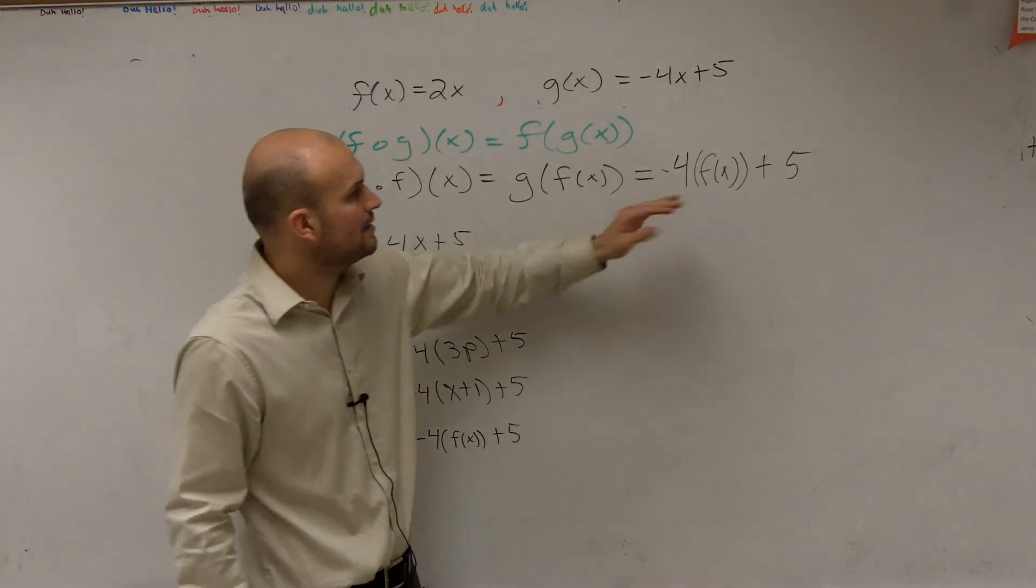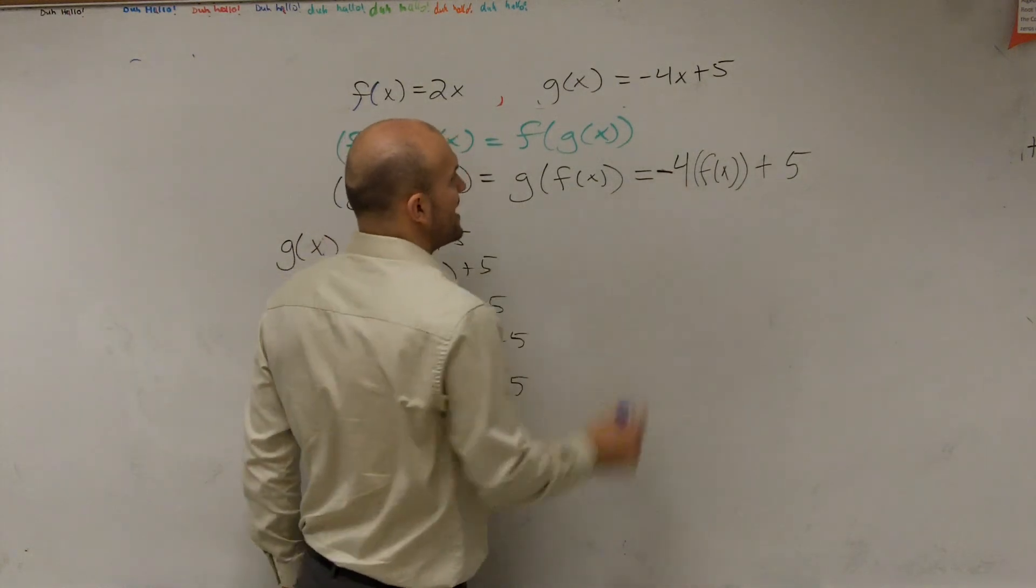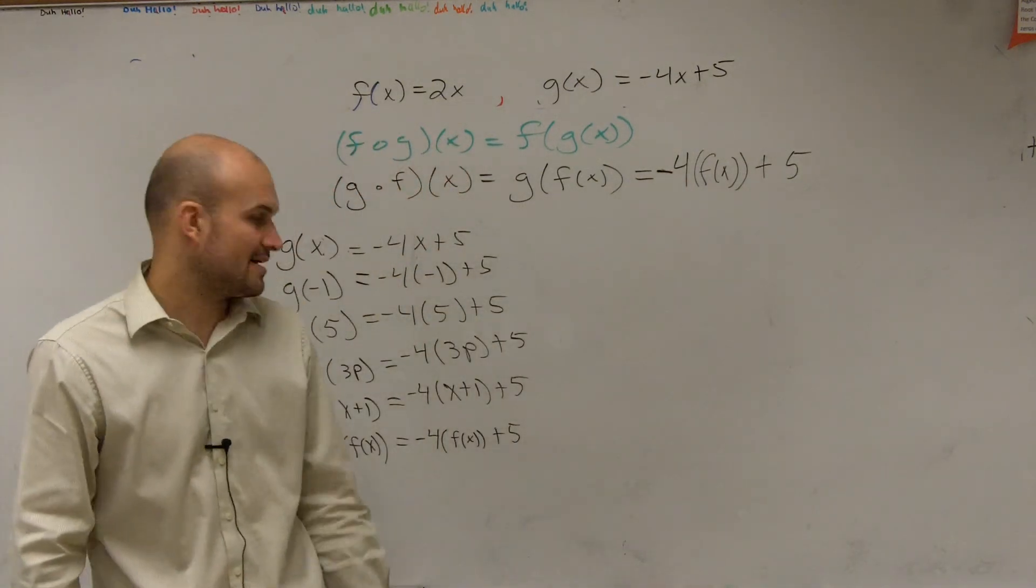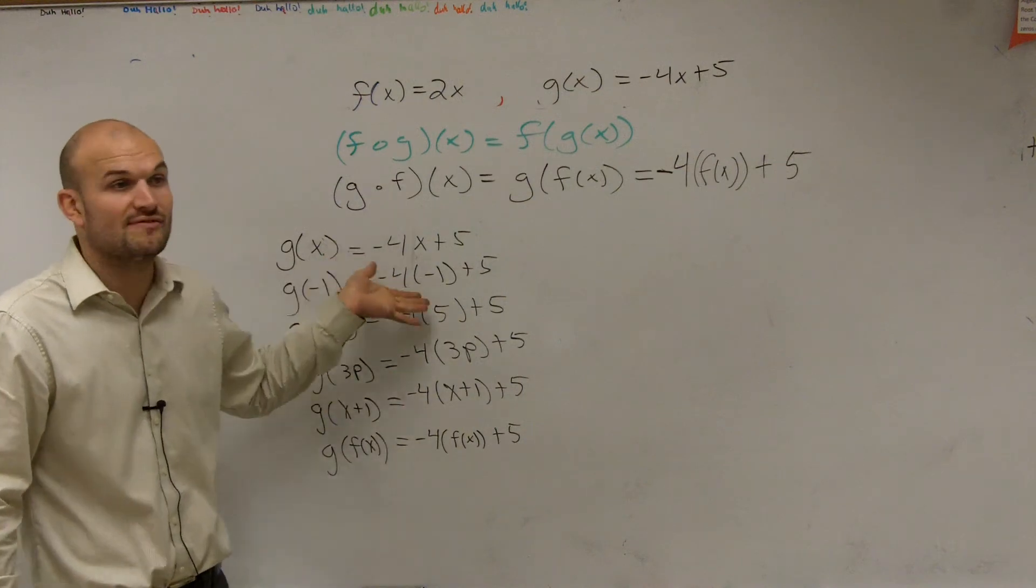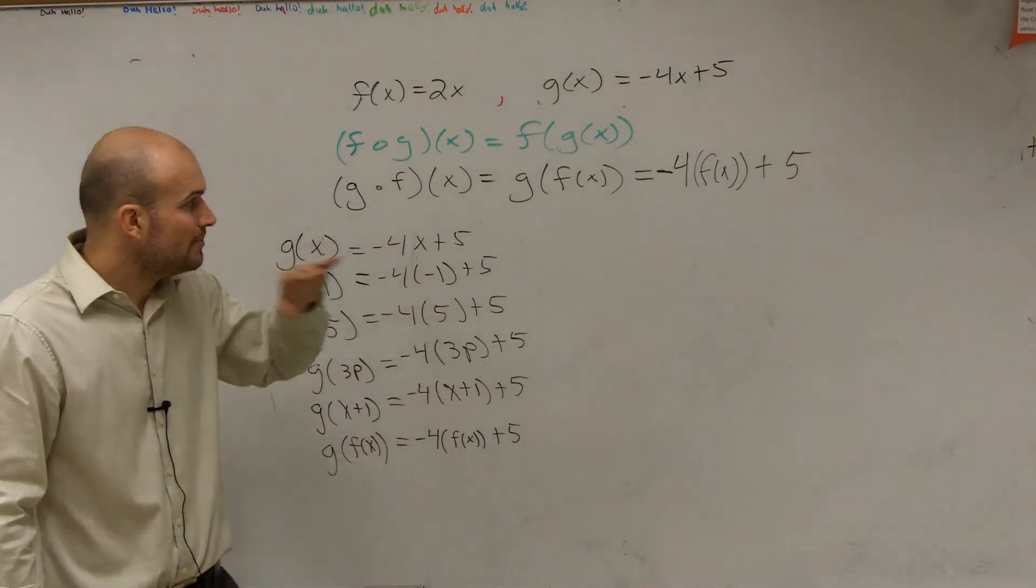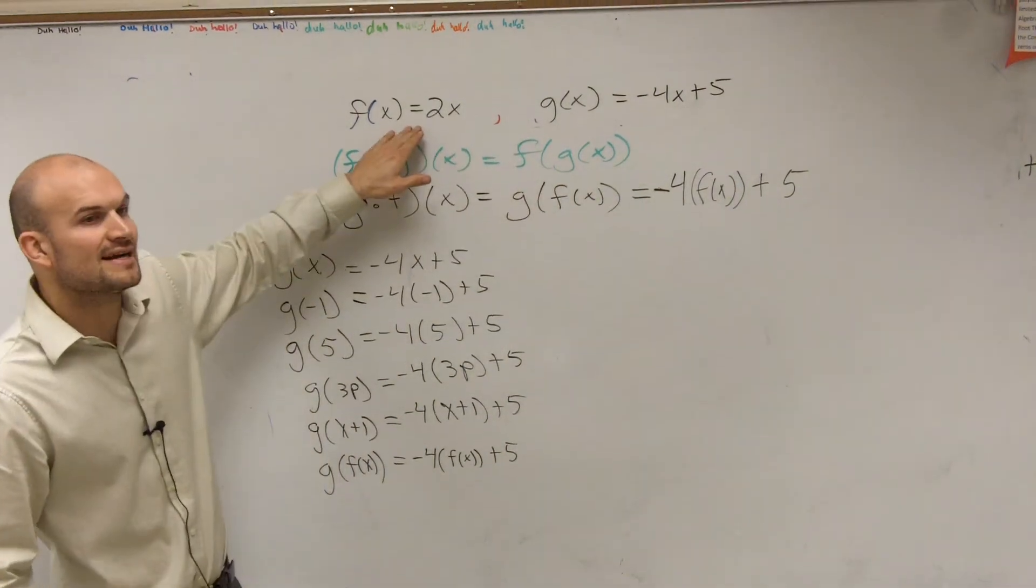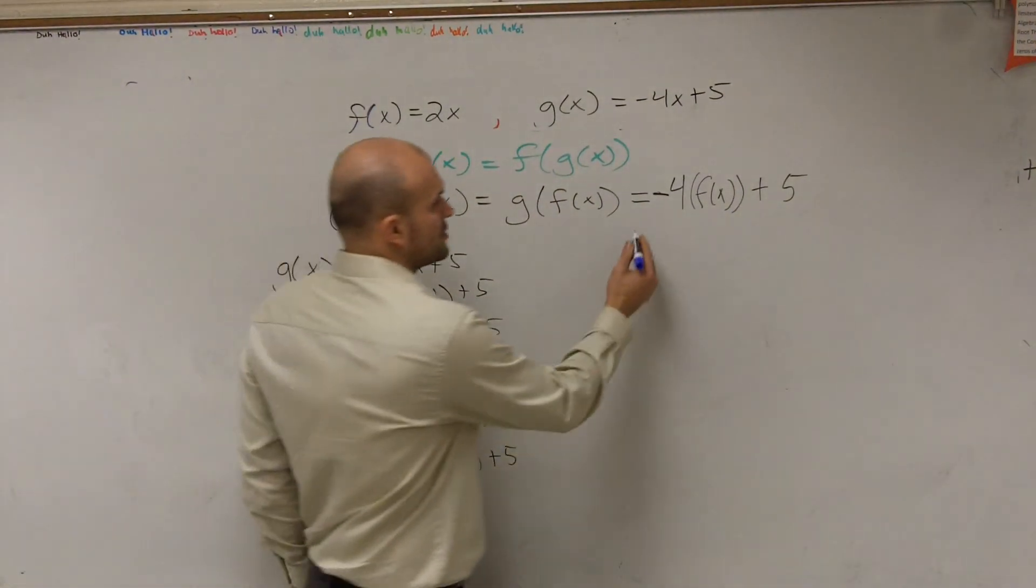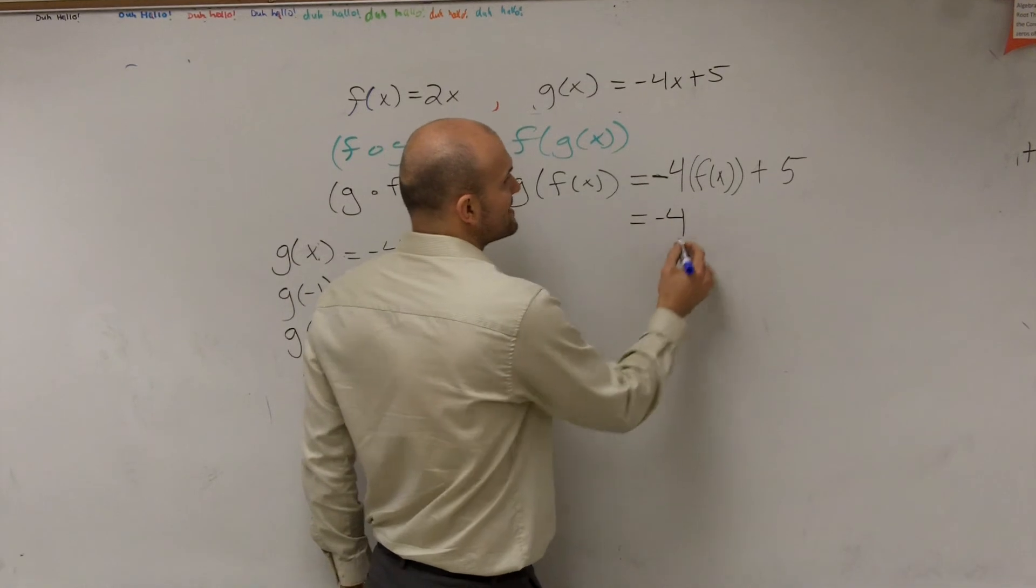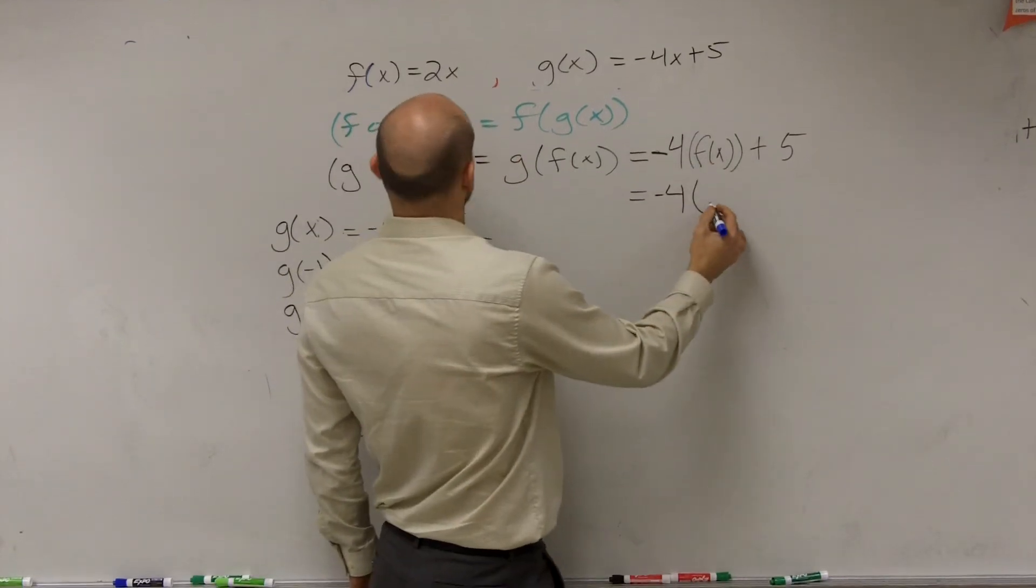And so now, I look at this and I say, okay, so I have negative 4 times f of x plus 5. Some of these you can evaluate for numbers. Some of these you're just going to evaluate to get an expression. But for here, I say, can I figure out what f of x is? Well, I provided you f of x is equal to 2x. So therefore, I'm going to now replace f of x in for 2x.